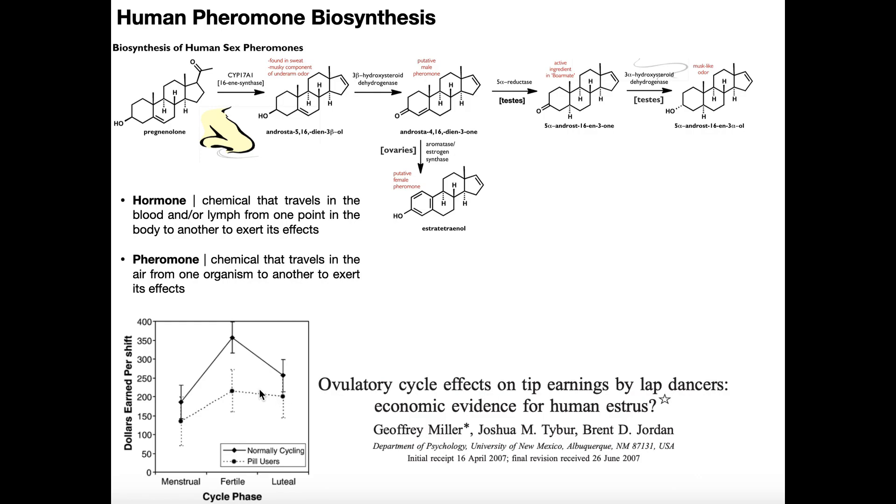Now, what did we say about the rodent estrus cycle? They're going to release these pheromones, in particular estratetraenol, when they are fertile. That's how the male rat knows when to mate. Well, you can see by this graph, it's pretty convincing here, that the women that earn the most money, that's the y-axis, the dollars earned per shift, the women that got the most money from the men were fertile.